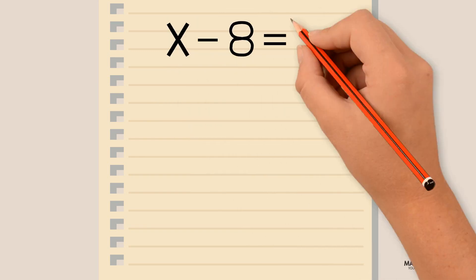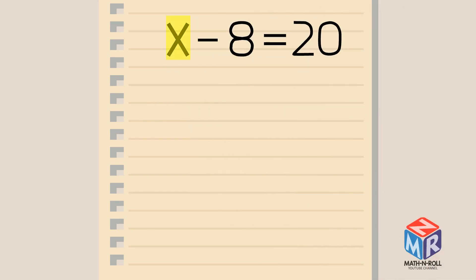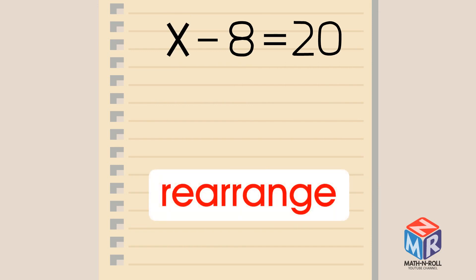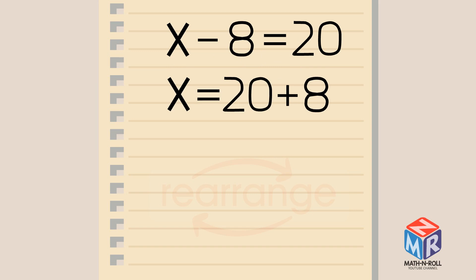If you have an equation that has an unknown value in it, you need to rearrange the equation until you have the unknown value all by itself on one side of the equal sign and all of the known values on the other side of the equal sign. How can we do it?